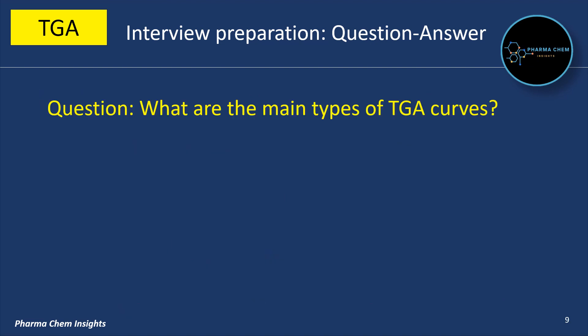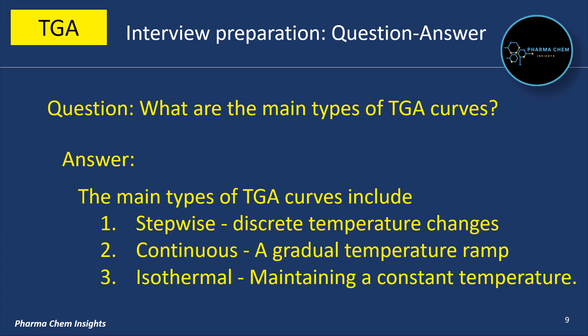What are the main types of TGA curves? The main types of TGA curves include: first, stepwise — discrete temperature changes; second, continuous — a gradual temperature ramp; and third, isothermal — maintaining a constant temperature.